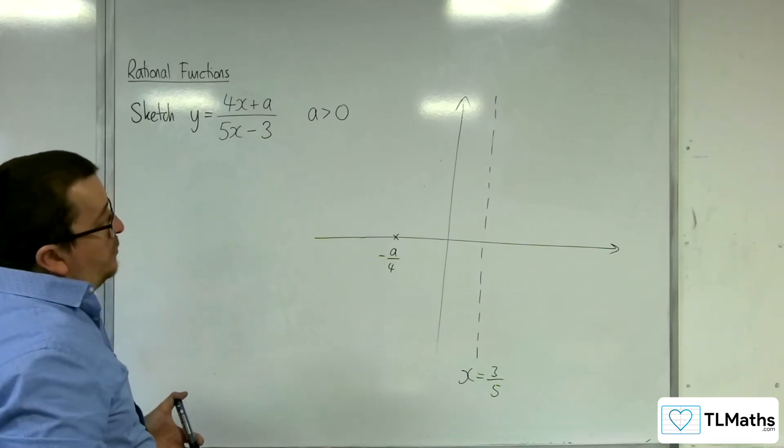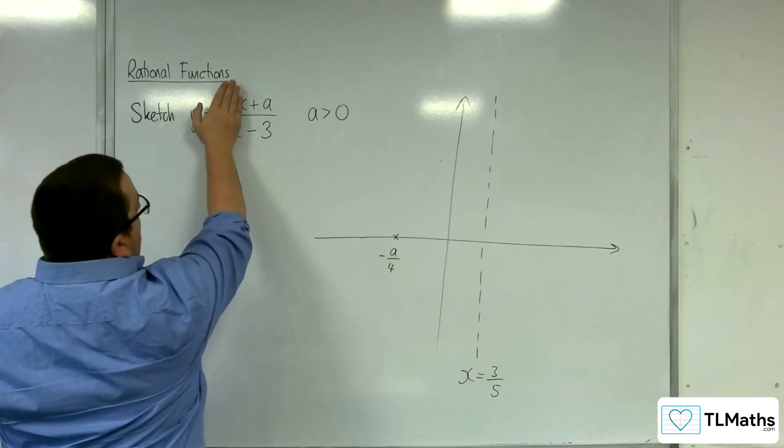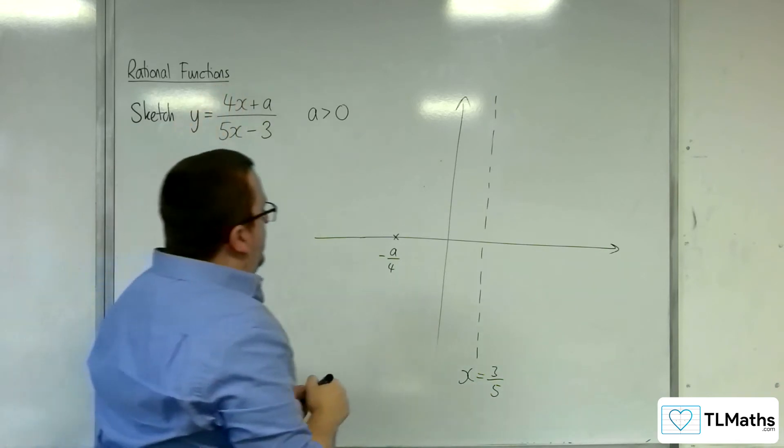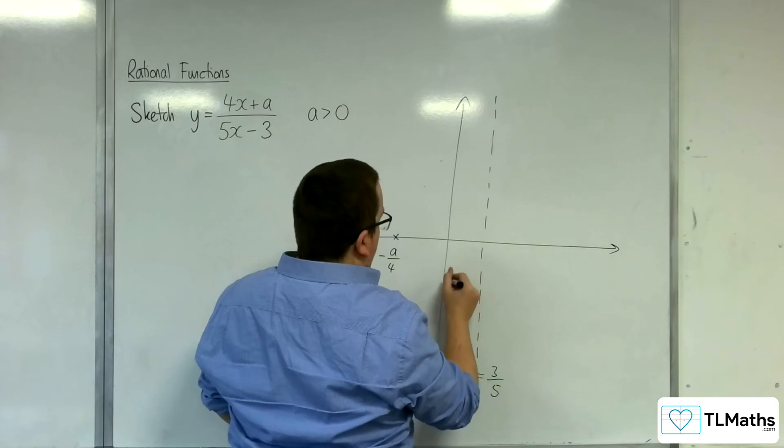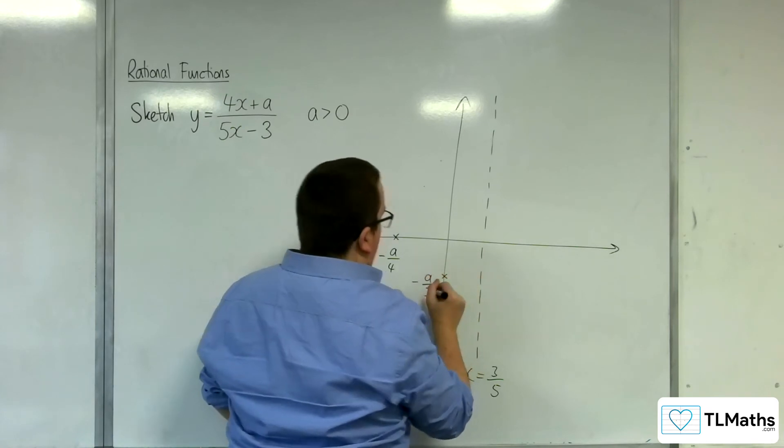The next thing is to work out where it crosses the y-axis. Now, that would be when x is 0, so we'll have a over minus 3. Now, because a is positive, that's definitely negative. So minus a over 3 is definitely going to be somewhere right there, for example. So minus a over 3.